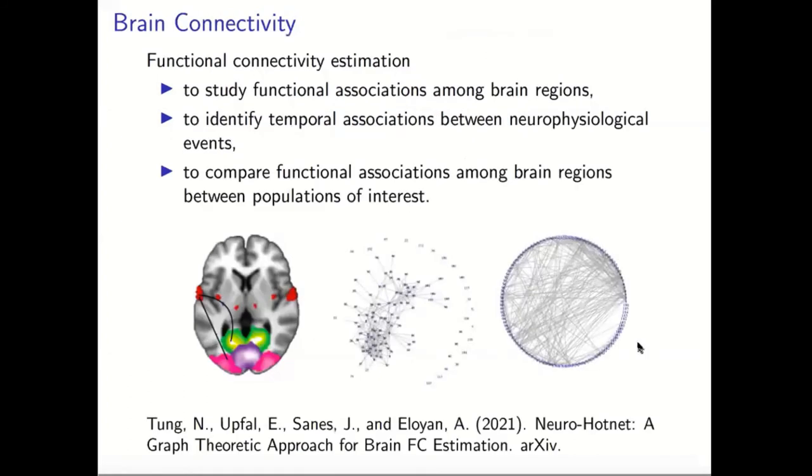So recently we submitted a paper that's also posted on archives. This was a collaboration with Jerome Sains in neuroscience and Ellie Uppal in computer science department and Nathan Tong, who is a student in the computer science department, did a lot of the work on this paper. We developed methods for computationally scalable approach for estimation of brain functional connectivity. The idea here is to develop robust methods that are based on using information of structural connectivity when estimating functional connectivity.